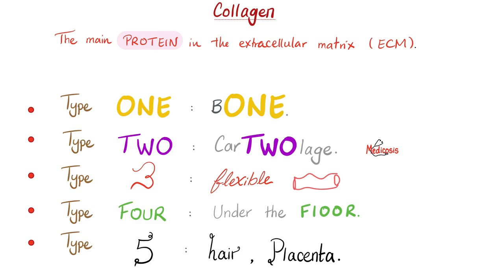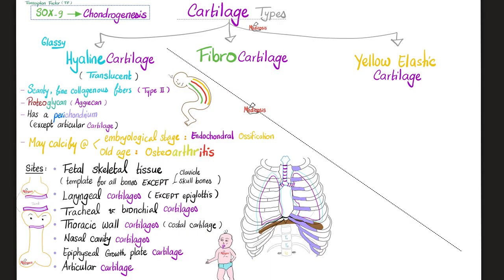There are way more than this — I believe there are 10 or more types of collagen. Today's topic is hyaline cartilage, but before we talk about hyaline cartilage, just remember that there is a transcription factor known as SOX9, which promotes chondrogenesis — the formation of cartilage.